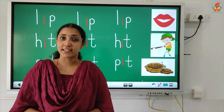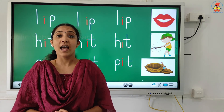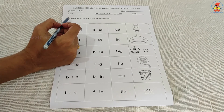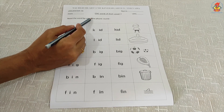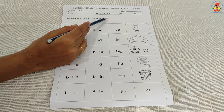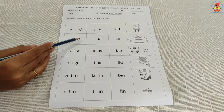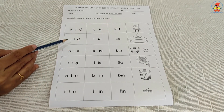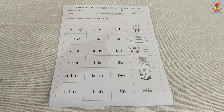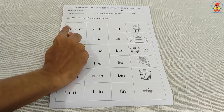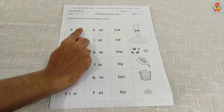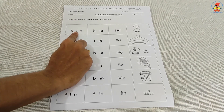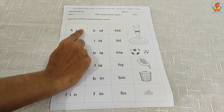Children, there is a reading activity for you. Have a look at the worksheet. The worksheet says read the word by using the phonic sound. Here you have all the words we have read before. What you have to do is touch each letter with your pointer finger when you read. I will show you one — k... i... d... kid.